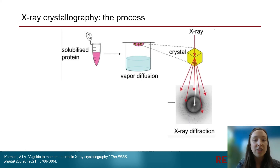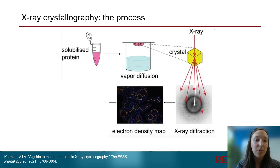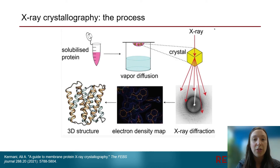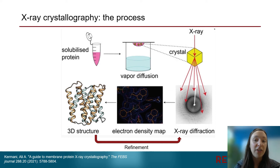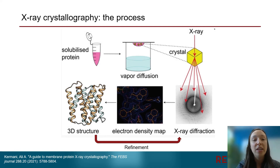Once you have crystals, you can then perform X-ray crystallography to produce a diffraction pattern. This diffraction pattern will be used to generate an electron density map, which will then be used to produce a 3D structure. However, this process is not a one-and-done method. The structure will then go through a refinement process where the generation of the electron density map is manually and automatically adjusted and optimized, and this can be repeated many times until the final model most optimally matches the diffraction pattern.